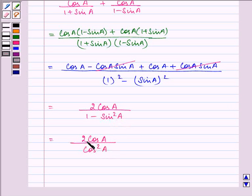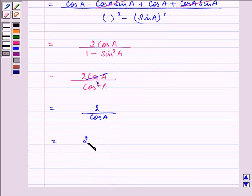On simplifying it further we are left with 2 upon cos A which can be written as 2 and 1 upon cos A can be written as secant A which is our RHS.